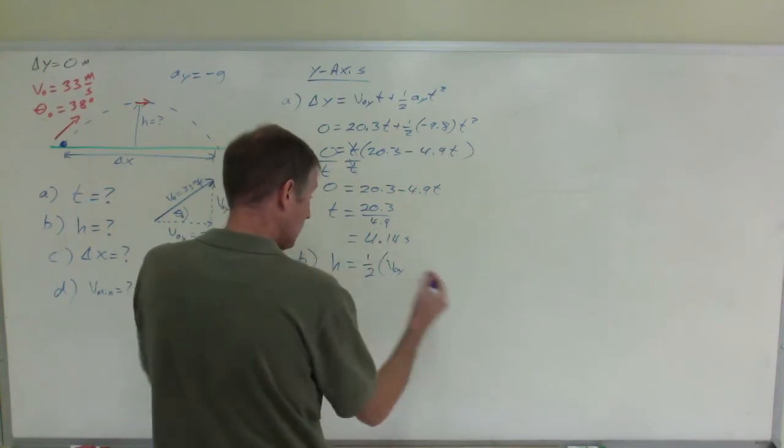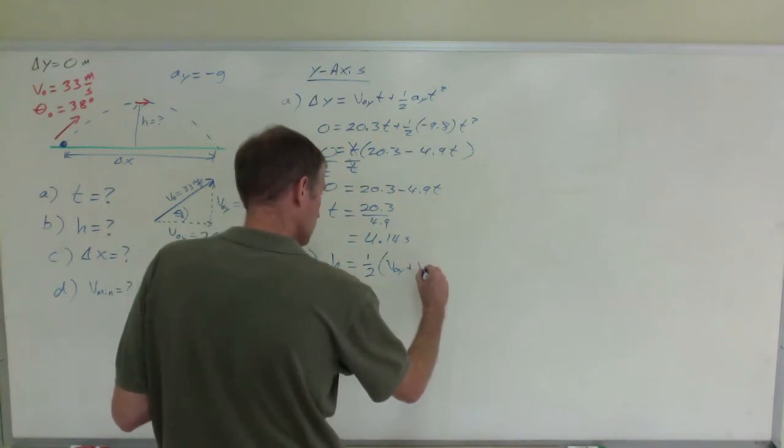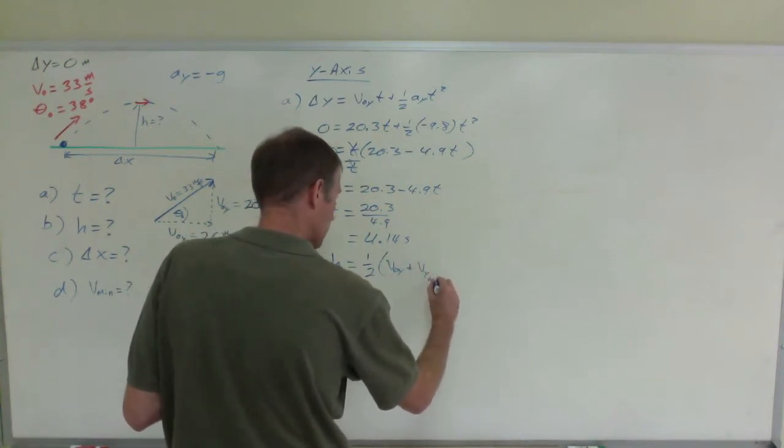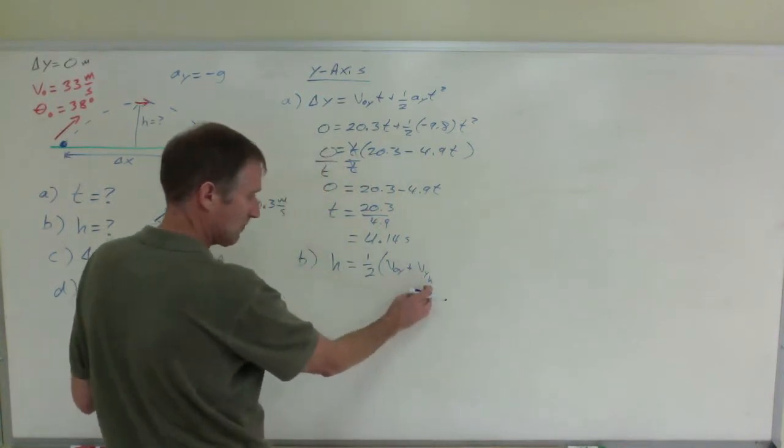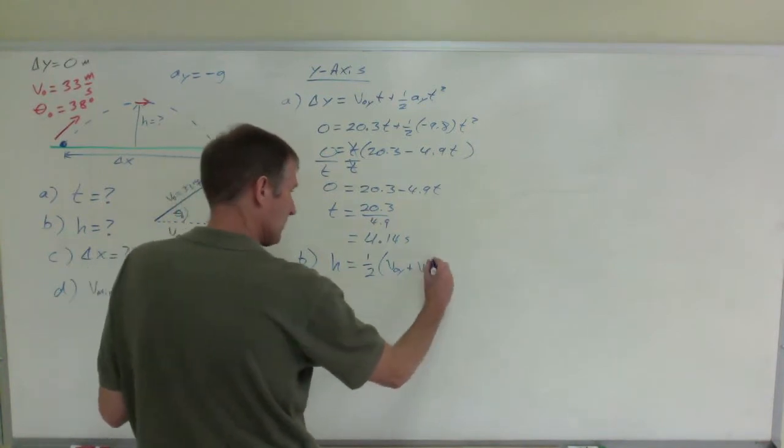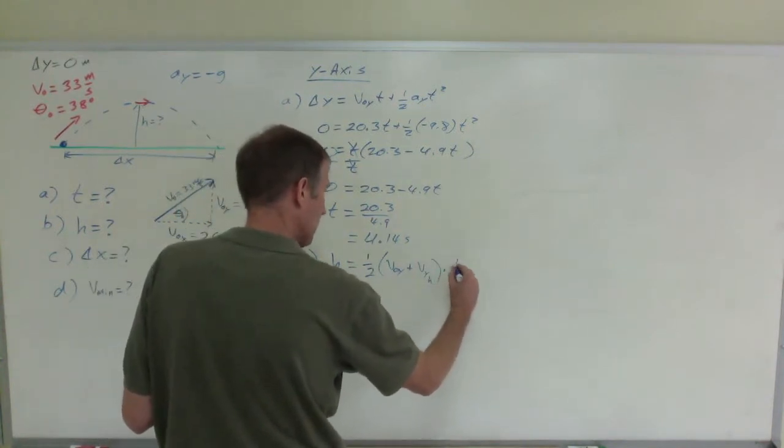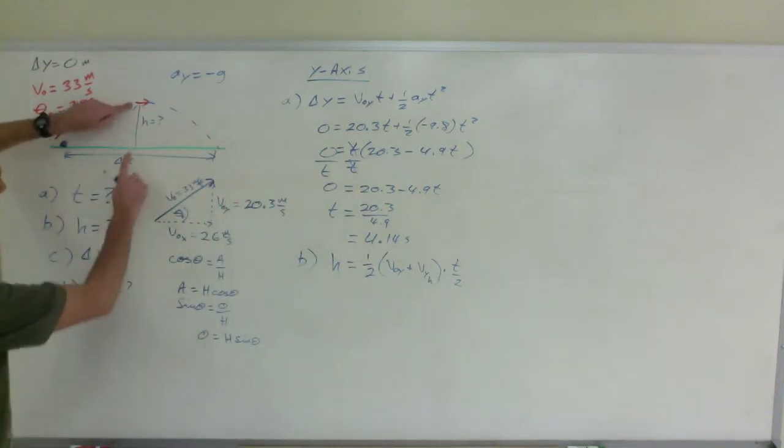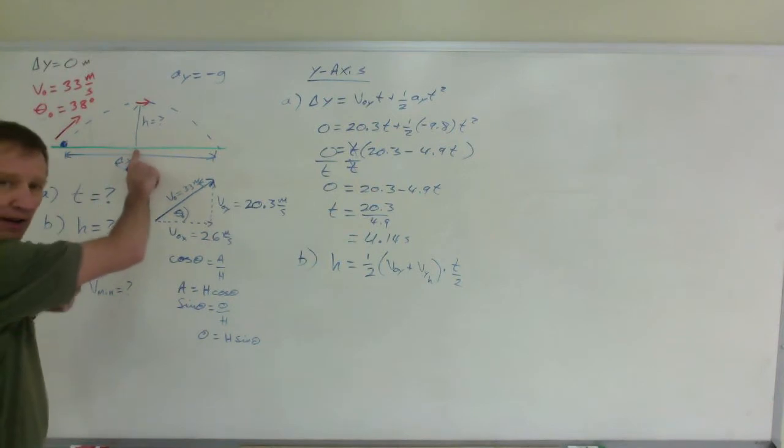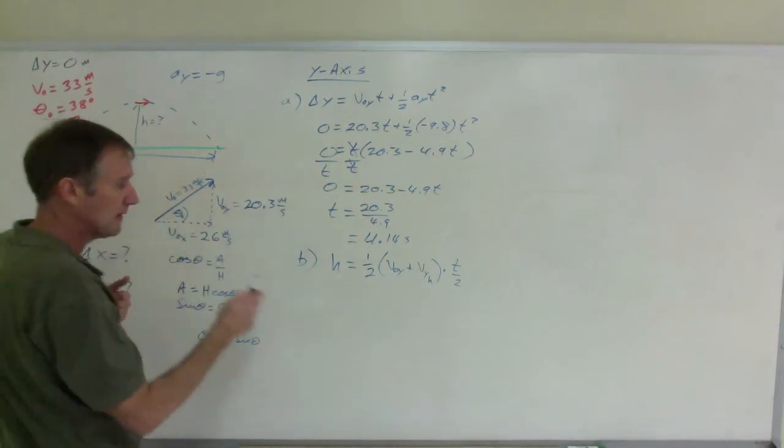V sub 0 y, I am still in the y-axis, plus Vy at the top. So I am going to put maximum. I will put an h for height. Its velocity at the maximum height times - now I am going to use half the time, right? Because I am interested in its height, its vertical position delta y at this point, which is only halfway. So I am going to use half the time.